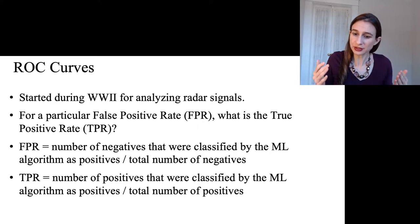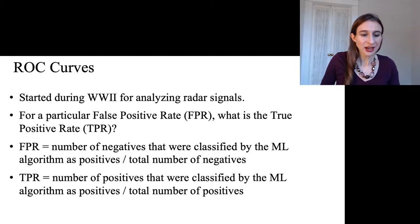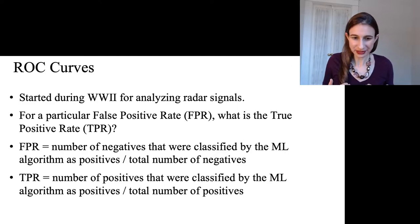The ROC curve plots exactly that trade-off between true detections and false detections, basically what happens when you turn that dial. So they ask for a particular false positive rate, what is the true positive rate?